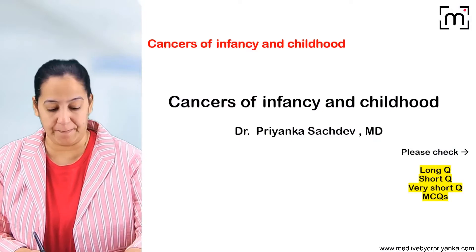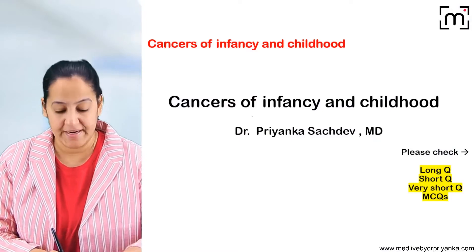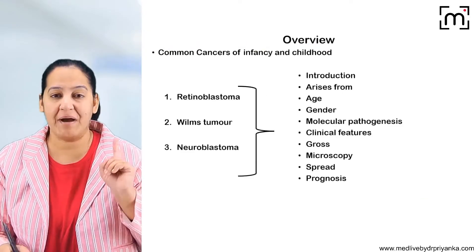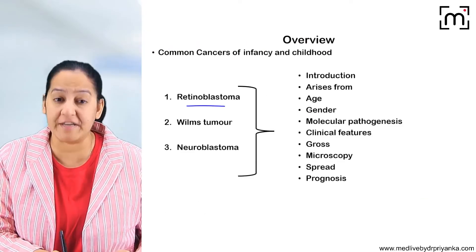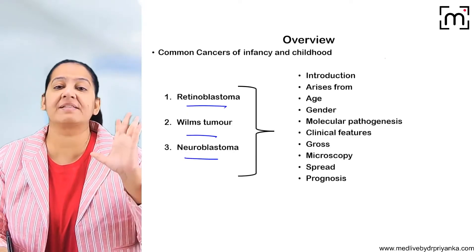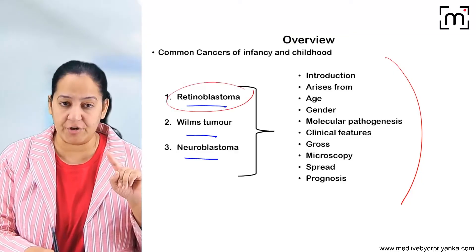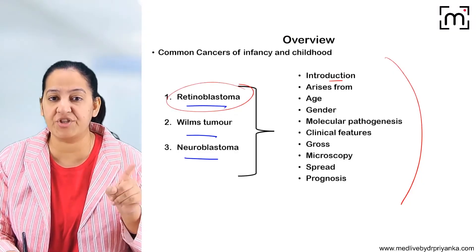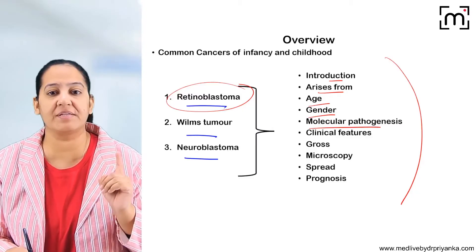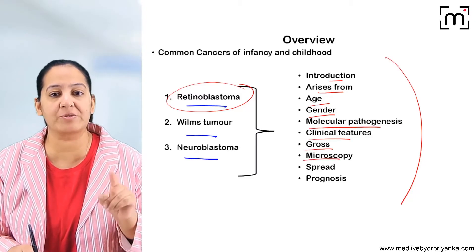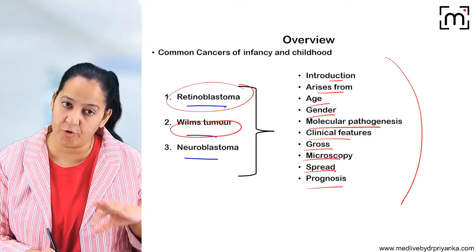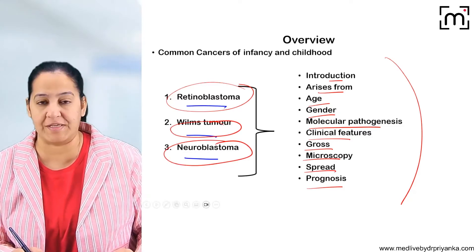We are starting the topic: cancers of infancy and childhood. I will be discussing three tumours — retinoblastoma, Wilms tumour, and neuroblastoma — each under the following headings one by one: introduction, cell of origin, age, gender, molecular pathogenesis, clinical features, gross, microscopy, spread, and prognosis. I will follow the same sequence for Wilms tumour and neuroblastoma.